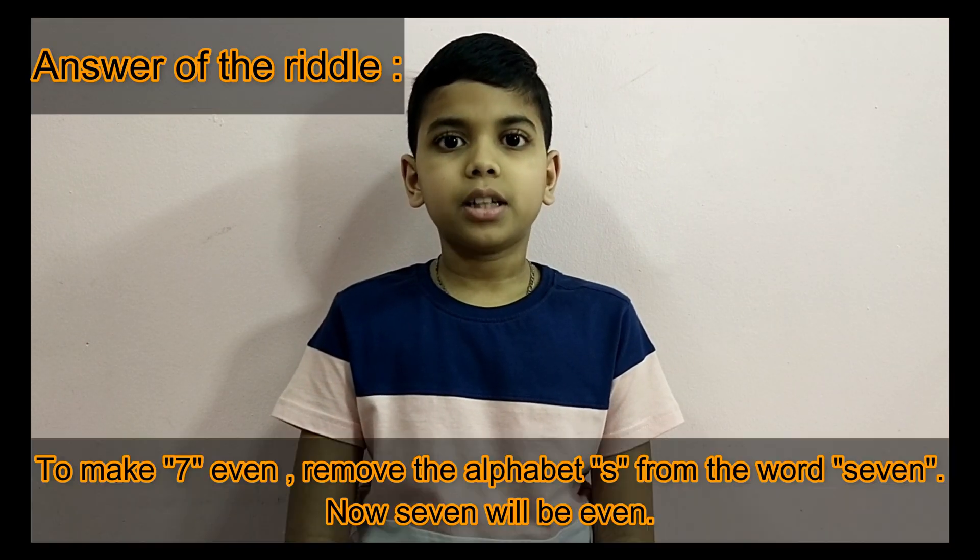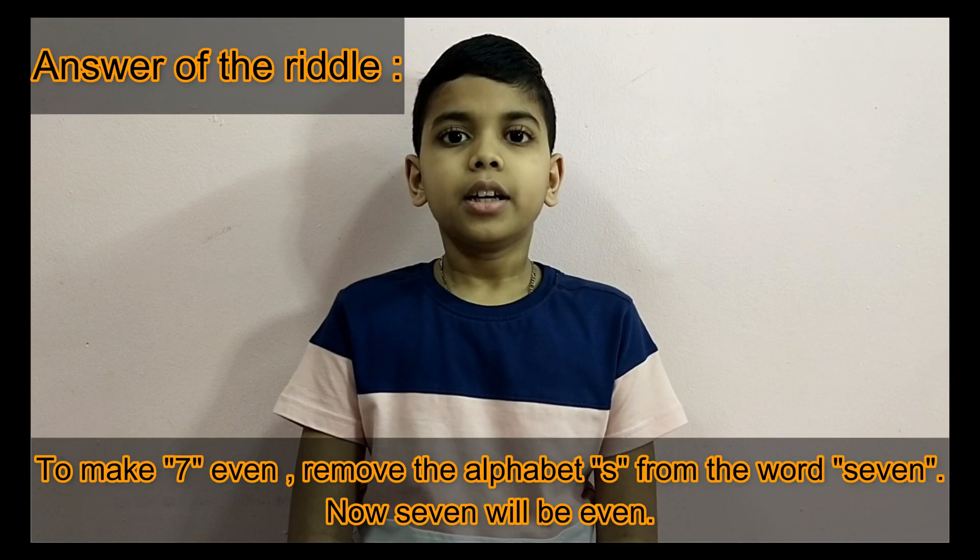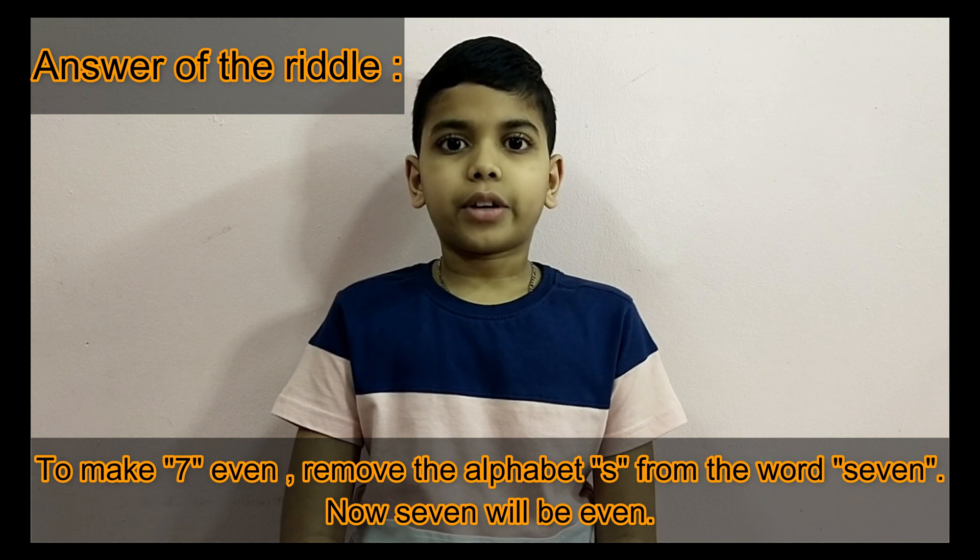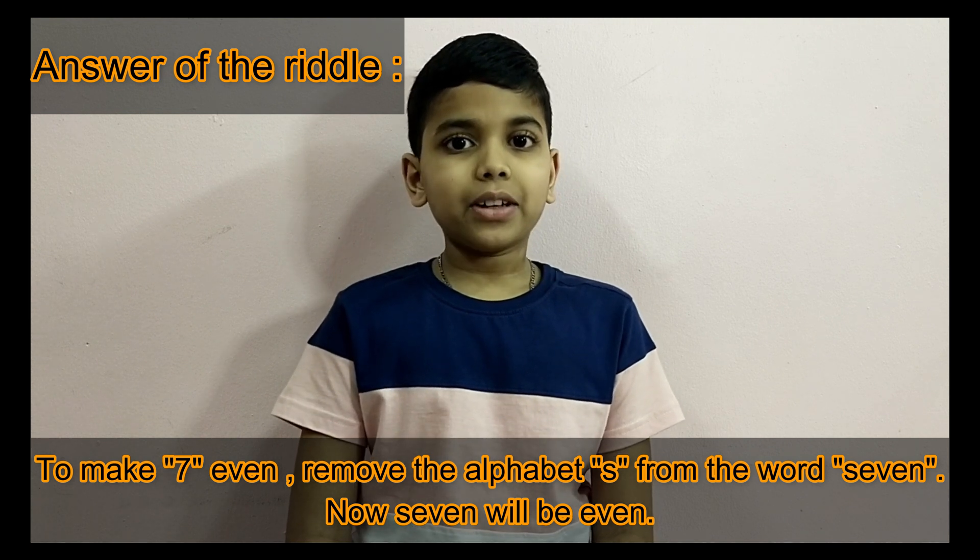Let me reveal the answer of the riddle. To make 7 even, remove the alphabet S from the word seven. Now seven will be even. Hope you all liked this video. Please like, share, and comment. Don't forget to subscribe and click the bell icon for new updates.